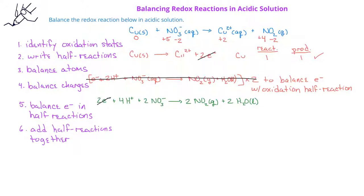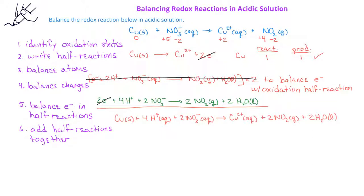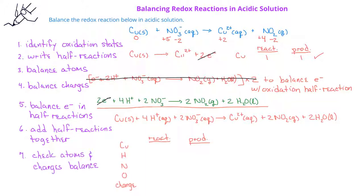Nothing else will cancel. Therefore, the overall balanced redox reaction is Cu solid plus four aqueous hydrogen ions plus two aqueous nitrate ions produces aqueous Cu²⁺ ion, two moles of NO2 gas, and two moles of liquid water. We can now check our atoms to make sure everything is balanced. We see that we have one copper, four hydrogens, two nitrogens, and six oxygens on each side of the equation.